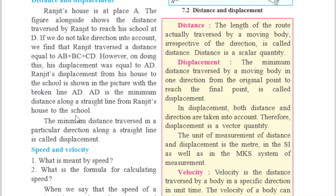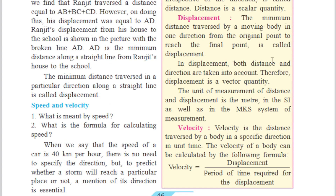The minimum distance traversed in a particular direction along a straight line is called displacement. Now, the length of a route actually traversed by a moving body irrespective of the direction is called the distance. Displacement is the minimum distance traversed by a moving body in one direction from the original point to reach the final point.